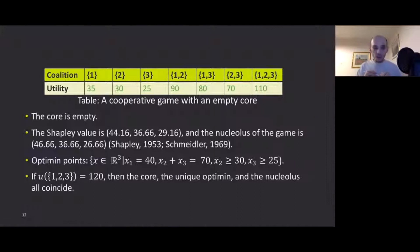Let me give you one example that illustrates this definition. Here is a cooperative game in which coalition one receives 35, two receives 30 and so on. And the grand coalition receives 110. The core is empty in this cooperative game. And the Shapley value is about 44, 36 and 29. And the nucleolus is 46, 36 and 26. Whereas the set of optimum points is defined as follows. Player one receives 40, player two and player three receive 70, and player two and three gets at least their individual rational payoff.